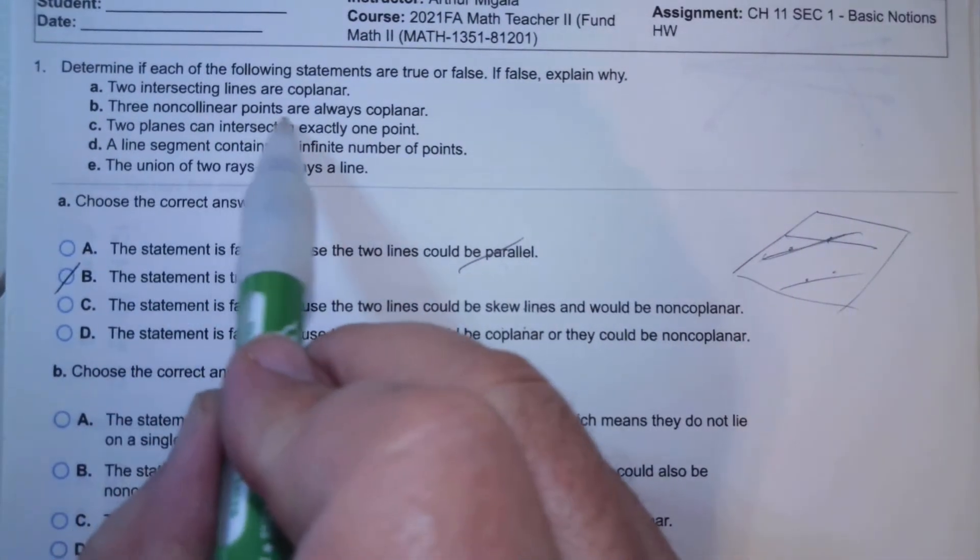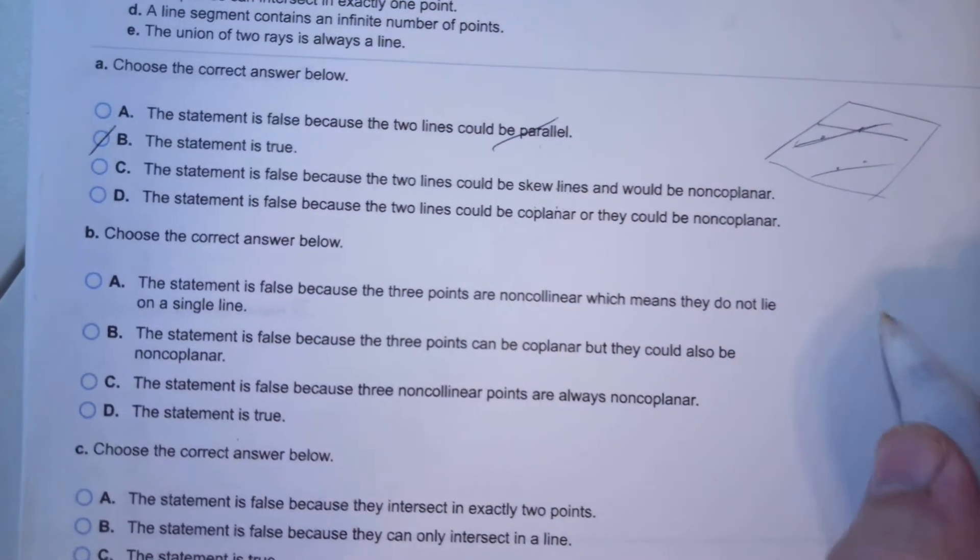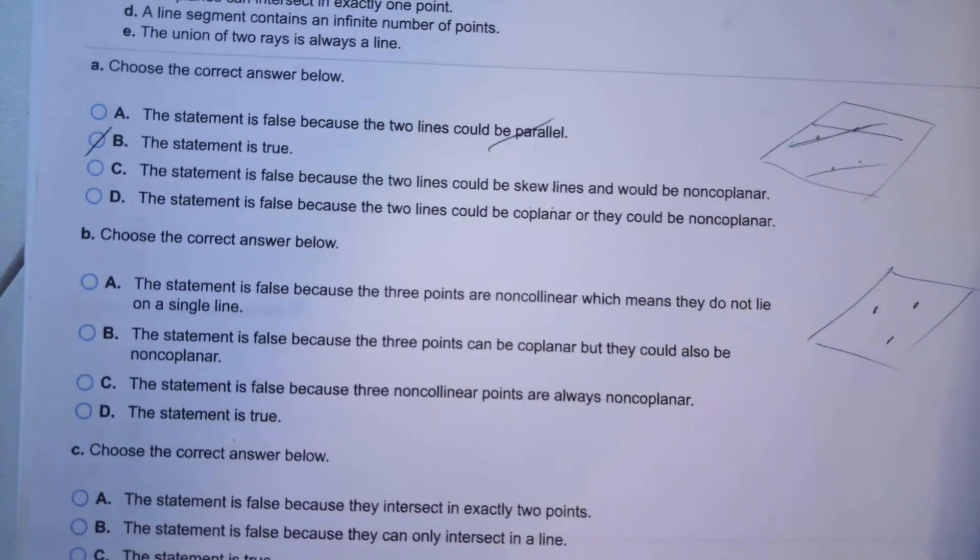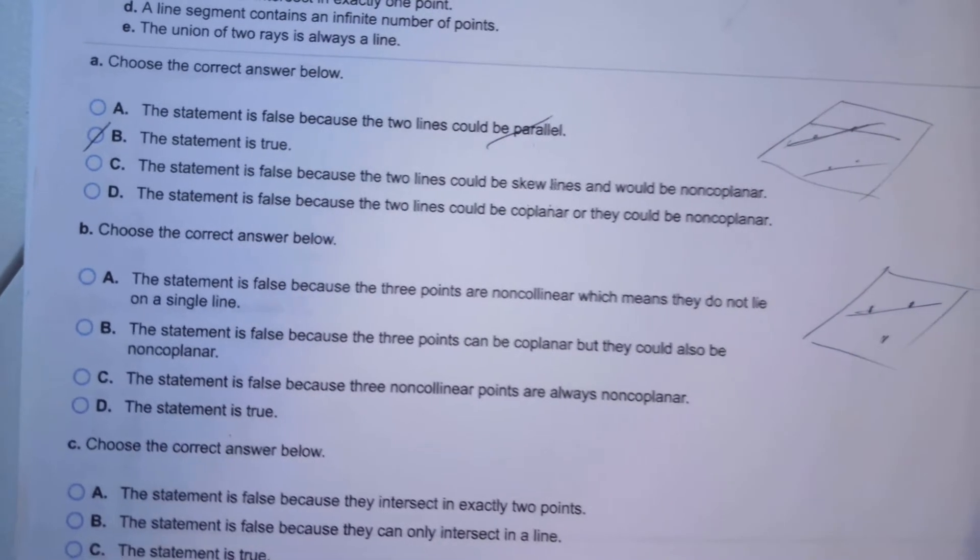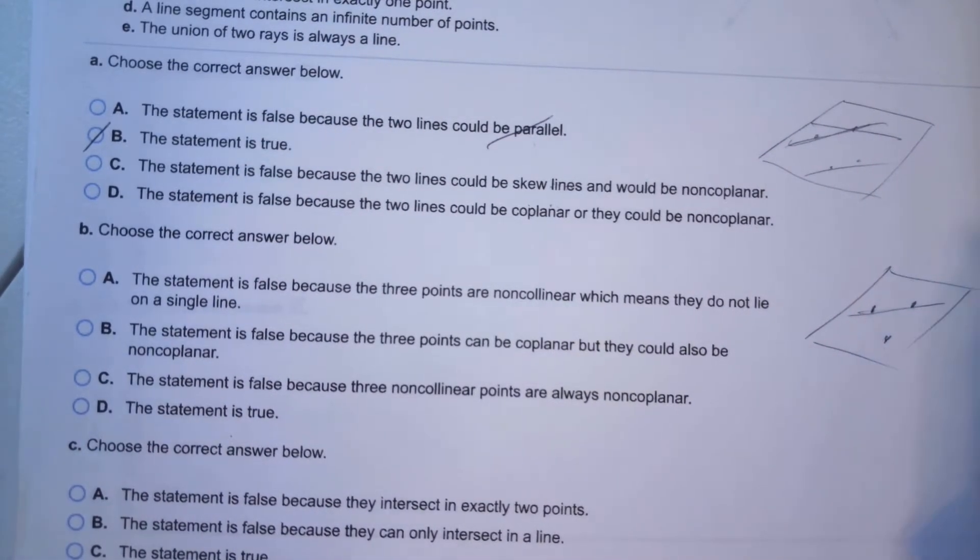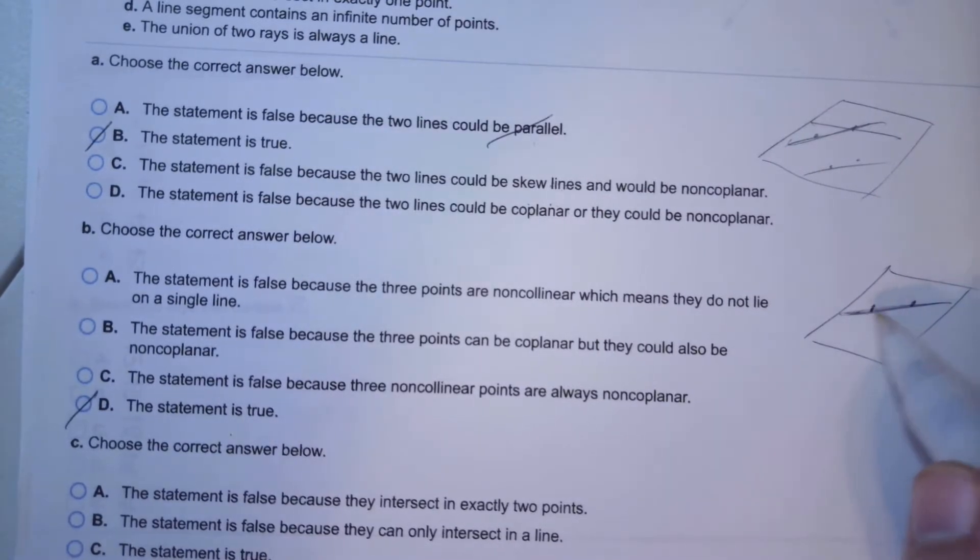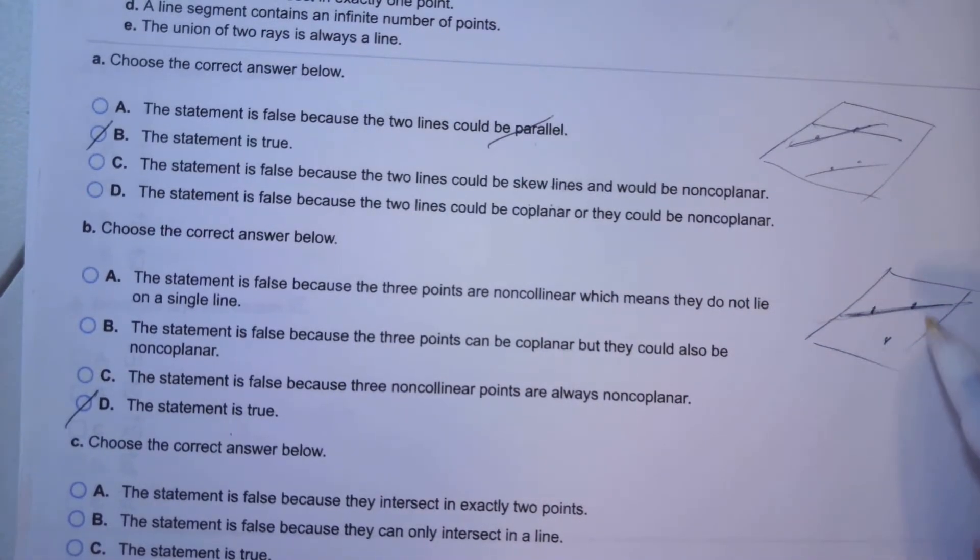Three non-colinear points are always coplanar. Yeah, that's by definition. We have a plane, we have three non-colinear points. Think of a sheet on a drying line, a bed cover on a drying line outside. It's on the drying line, and you can put a dot on the bottom or anywhere on that sheet. Those are the three non-colinear points. So it's always true.